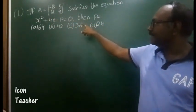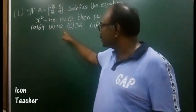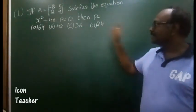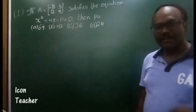4x minus p is equal to 0, then the value of p is equal to: option (a) 64, option (b) 42, option (c) 36, option (d) 24. Now this can be solved in a much simpler way based upon a small trick.